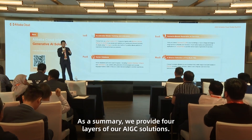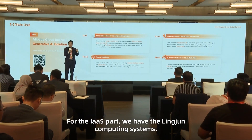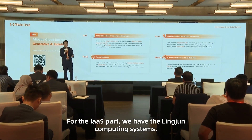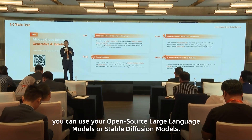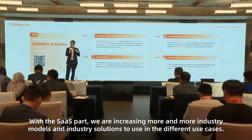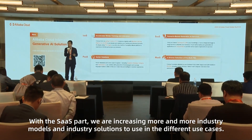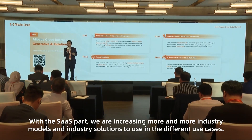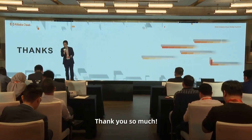As a summary, we provide four layers of our AIGC solutions. For the IaaS layer, we have the LianGen computing system. For the PaaS layer, we have our vector stores. For the MaaS layer, with PyEAS you can use open-source language models or stable diffusion models. And for the SaaS layer, we are continuously adding more industry models and industry solutions for different use cases. That's all from my side. Thank you so much.